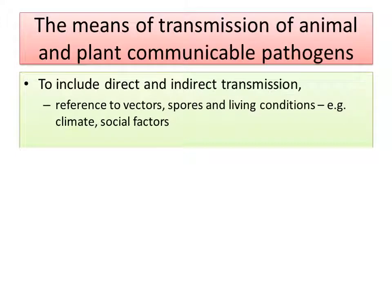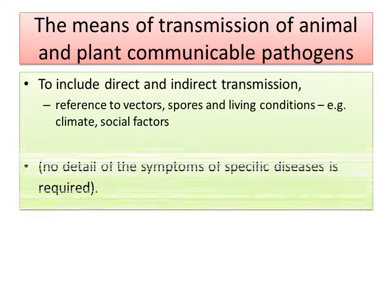The second part of this PowerPoint is the means of transmission of animal and plant communicable pathogens — basically how do the pathogens get from one organism to another? There are two main methods: direct and indirect transmission. This refers to vectors, spores, living conditions, climate, social factors and so on. You're not expected to know the symptoms of the diseases for this particular section — this was outlined in the first part of the PowerPoint from the specification.